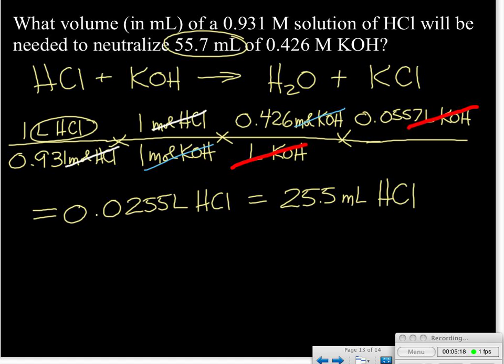you would expect that if the two solutions were of equal concentration, you would need equal volumes. Since in this case the concentration of the hydrochloric acid is a little more than double that of the potassium hydroxide, you would think you'd need probably double the amount of the potassium hydroxide to neutralize the acid. Sure enough, that's what we've got here for our answer, and our answer does make sense—it requires less of the hydrochloric acid because it's more concentrated.